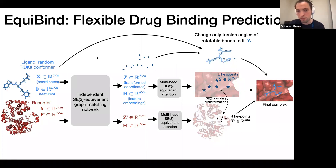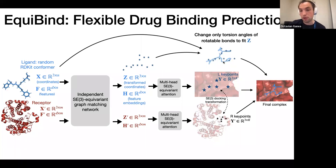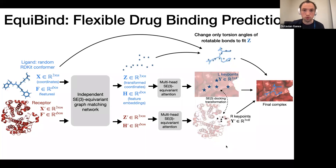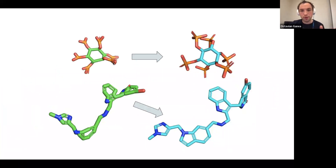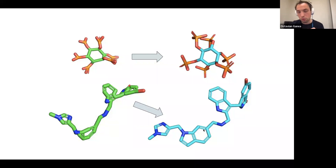In practice, the predicted point cloud can fairly deform local structures and rings. We apply a post-processing step to guarantee biologically plausible deformations: we take the initial ligand conformation and change only torsion angles of rotatable bonds so that it fits well to the transformed point cloud Z. This is done very fast using a spatial von Mises log-likelihood distribution, detailed in our paper.